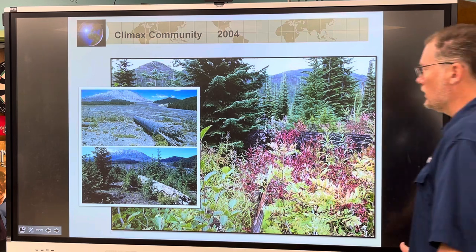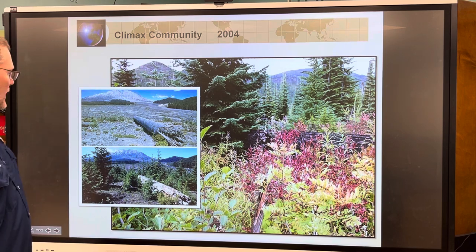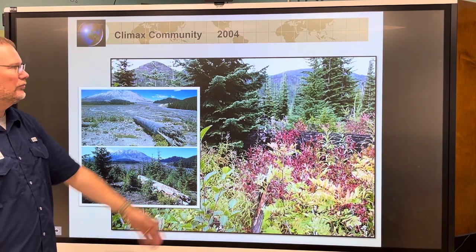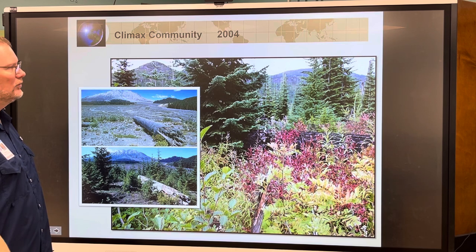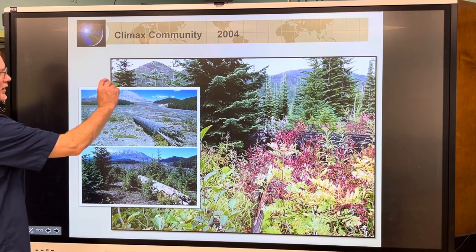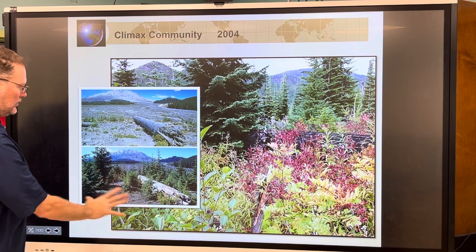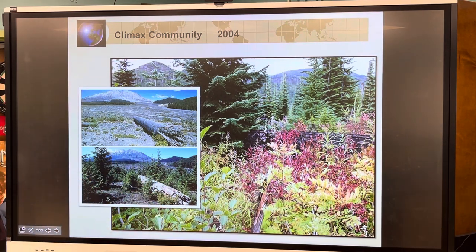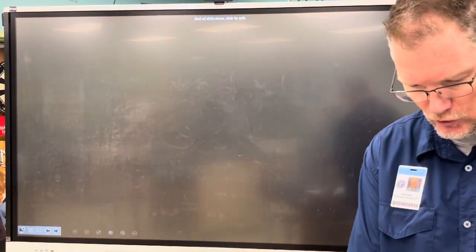By 2004, about 24 years after the eruption, the same areas show substantial forest regrowth — a perfect example of succession occurring after a natural catastrophic event. The pyroclastic flow killed everything, but roughly 20 years later significant vegetation had returned. That's the end of the notes — make sure you turn this in today.